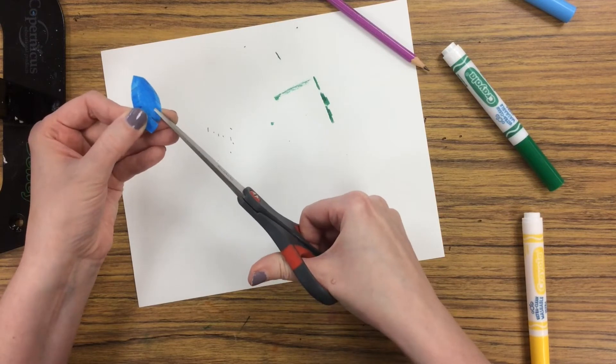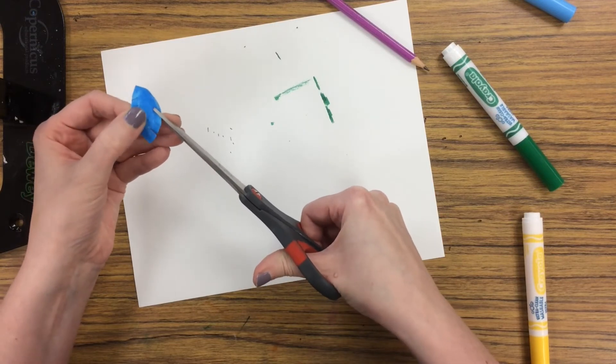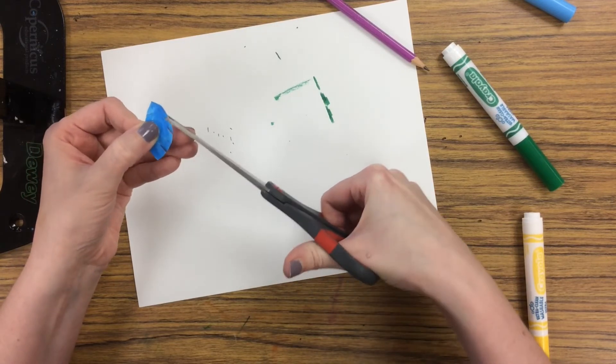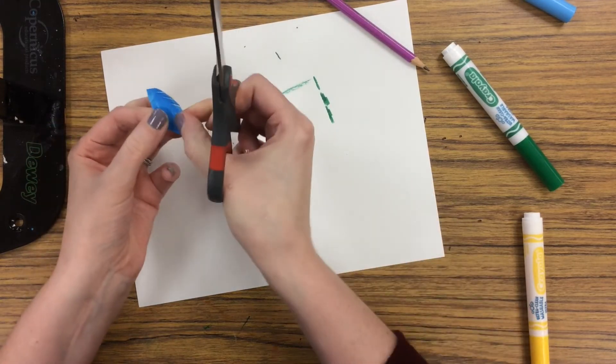You could color it green instead and cut some of these little notches in there as well to give a leaf some texture.